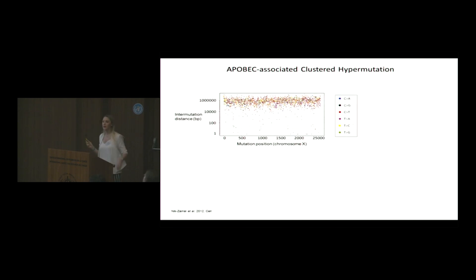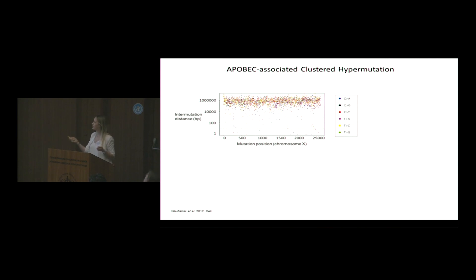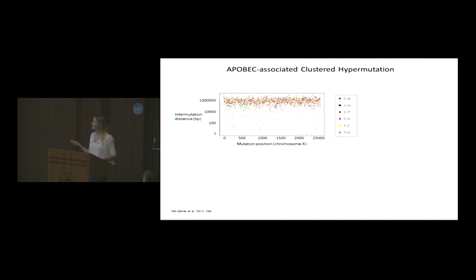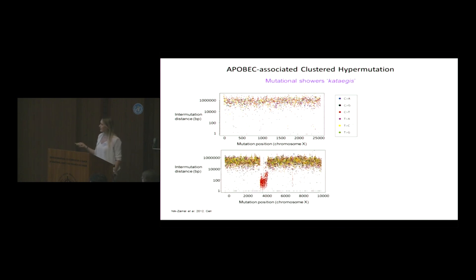Most of the signatures we've discussed, including signatures 2 and 13, are genome-wide. Here I'm showing a proportion of chromosome X, with mutations positioned alongside it, colored by base substitution type, and on the y-axis, intermutational distance between consecutive mutations. For most signatures they are more or less equidistant. However, every now and then clusters of mutations are observed — first observed in breast cancer — referred to as mutational showers, or kataegis, from the Greek word for thunderstorm.